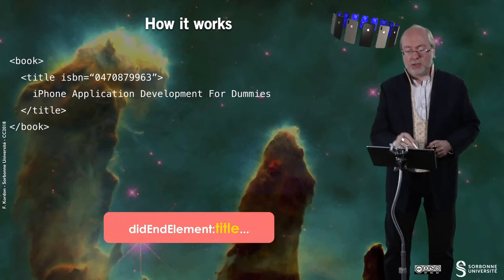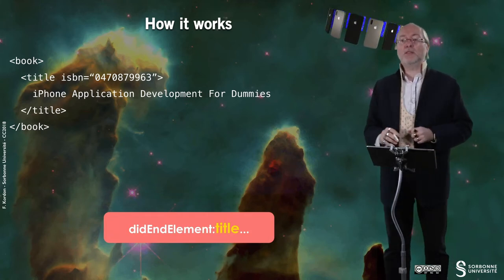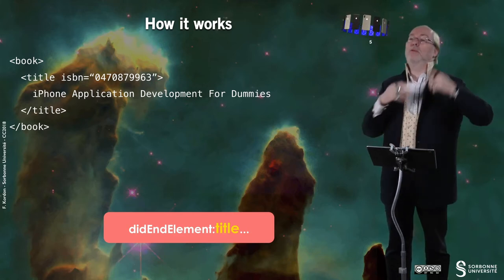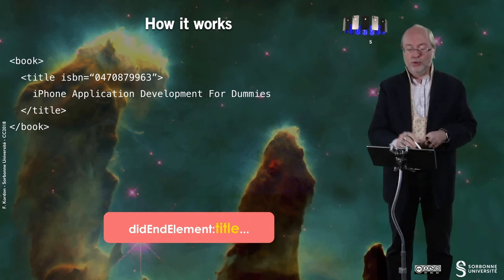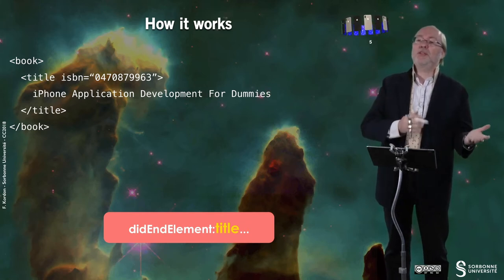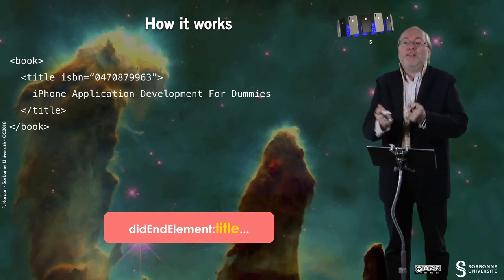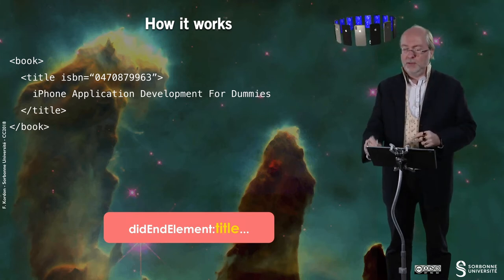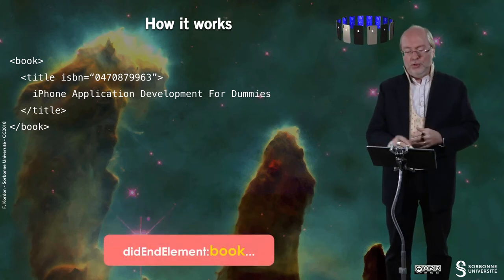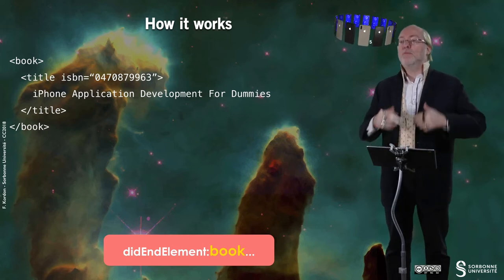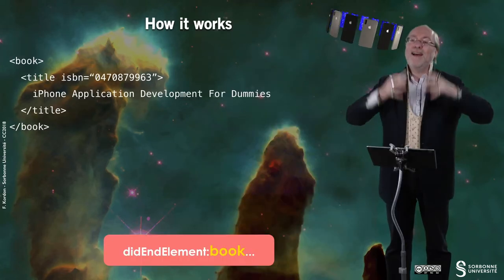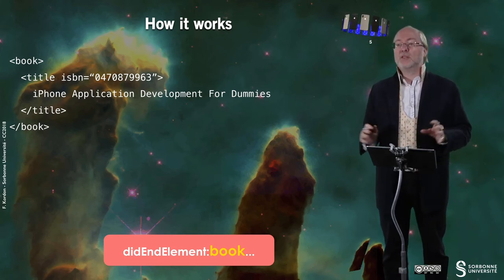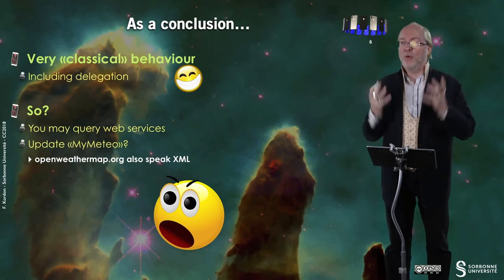Then you are invoked because you reached the end of an element — did-end-element. At that point, you may have stored the information you got when you entered the element and all you found between the beginning of the tag and the end of the tag. So you can build your object, typically a title object. Then you go to did-end-element for 'book', and you know that you have everything about the book. You could have other subsections, and so on.